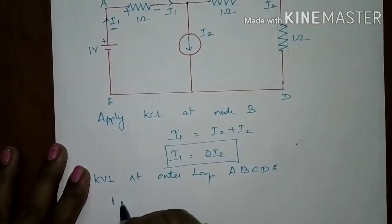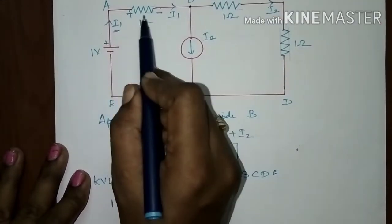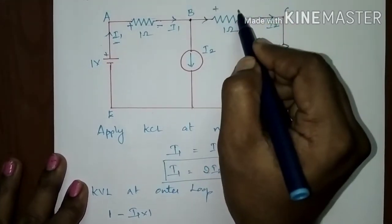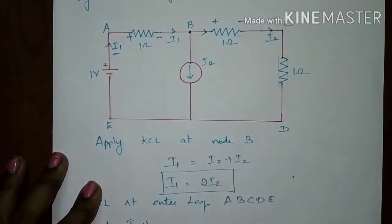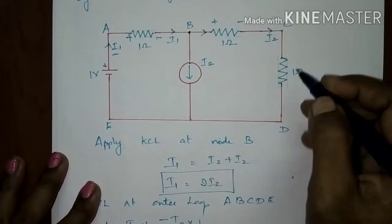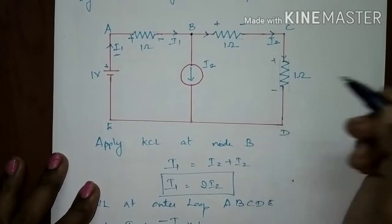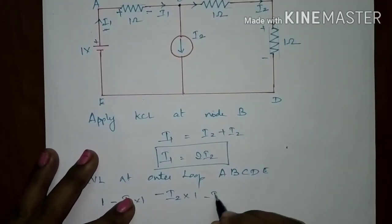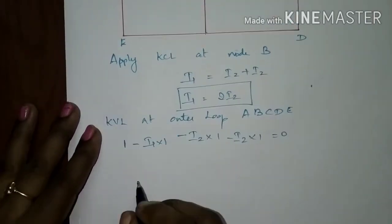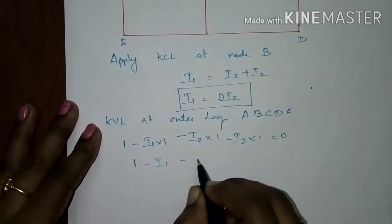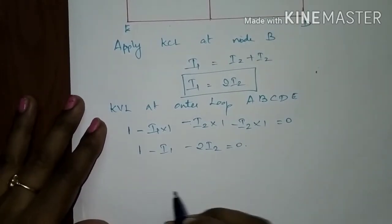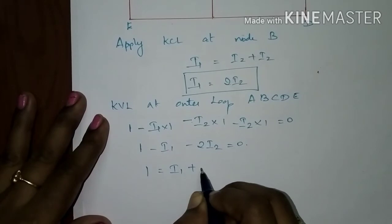So we get: 1 minus i1 into 1 ohm (potential fall) minus i2 into 1 ohm (potential fall, since the entering end is positive and leaving end is negative) minus i2 into 1 ohm equals 0. Simplifying: 1 minus i1 minus 2*i2 equals 0, so 1 equals i1 plus 2*i2.